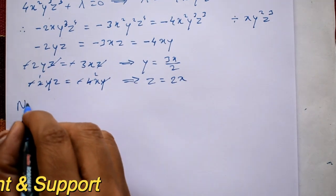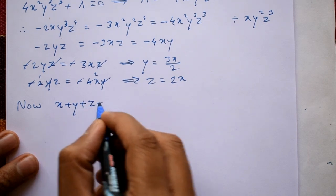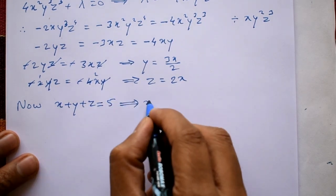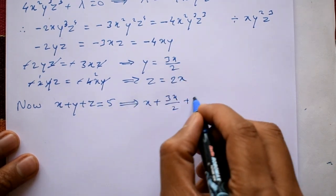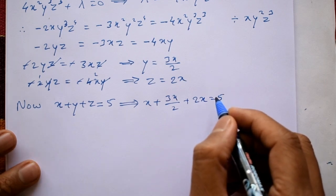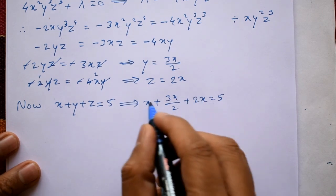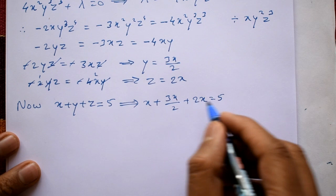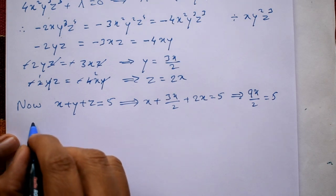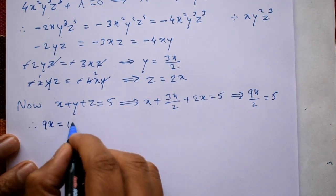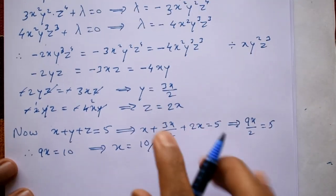Using the constraint x plus y plus z equal to 5: substituting y = 3x/2 and z = 2x gives x plus 3x/2 plus 2x equal to 5. Combining terms: 2 plus 3 plus 4 over 2 gives 9x/2 equal to 5, so 9x equals 10, therefore x equals 10/9.